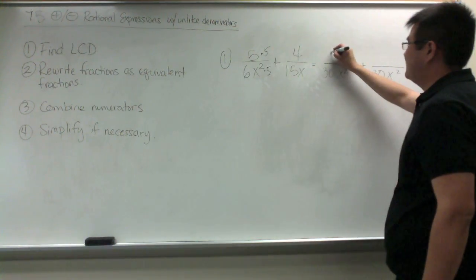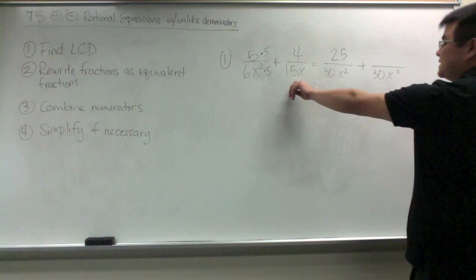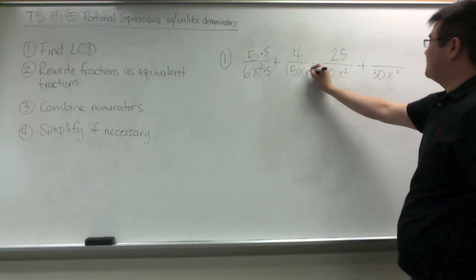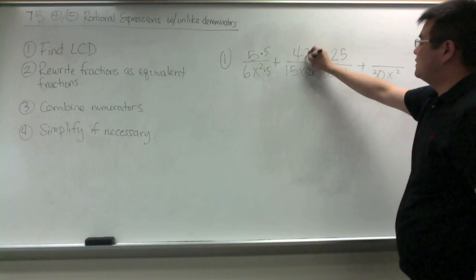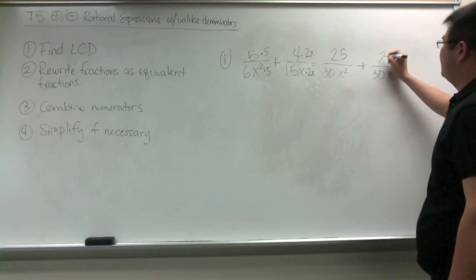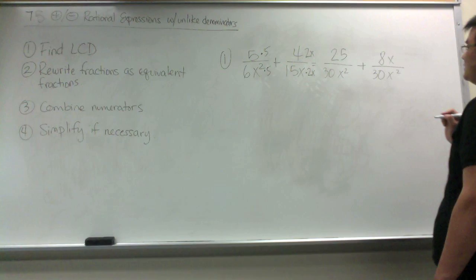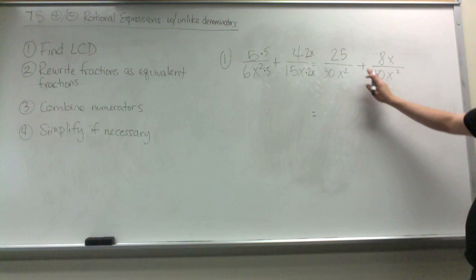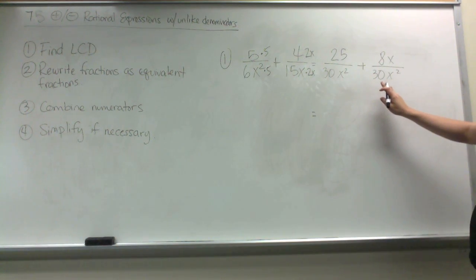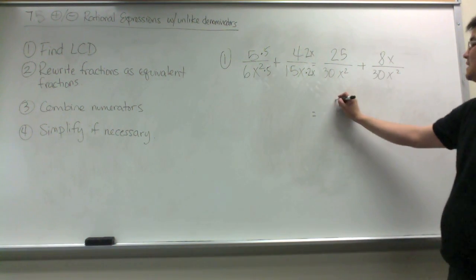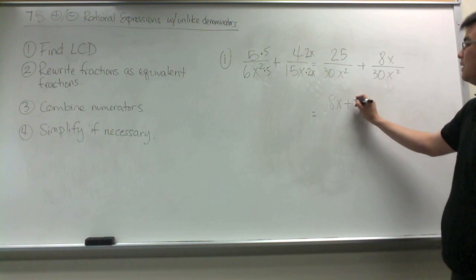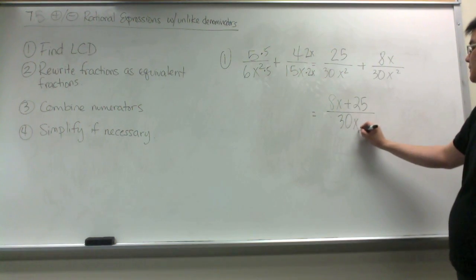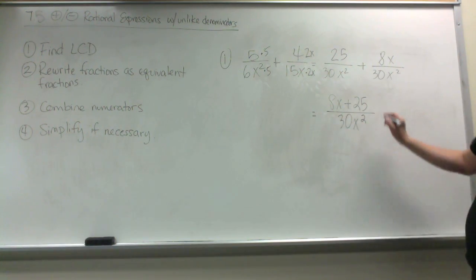So I'm going to multiply the numerator by 5; 5 times 5 is 25. For the second fraction, 15x times what would give me 30x squared? That would be 2x, so I'm going to multiply the numerator by 2x, and we get 4 times 2x is 8x. Now we combine our numerators since the denominators are the same. 25 plus 8x is 8x plus 25 — remember, we always write the variable first — over 30x squared.